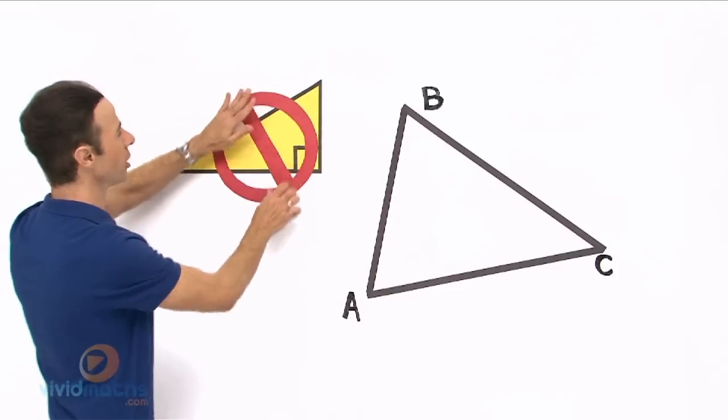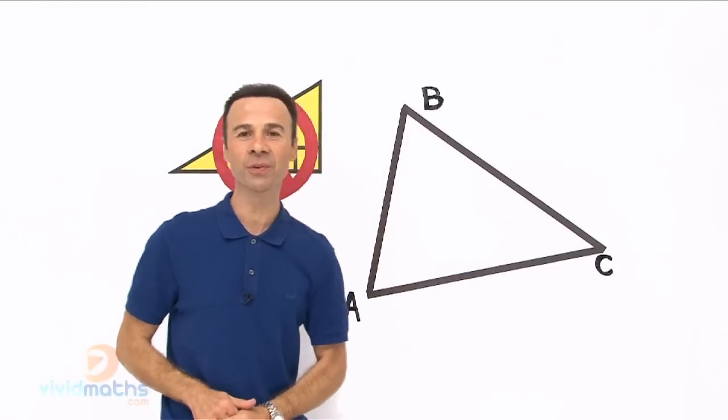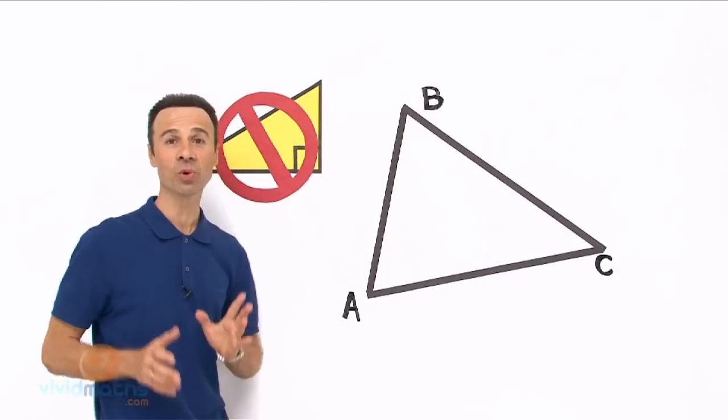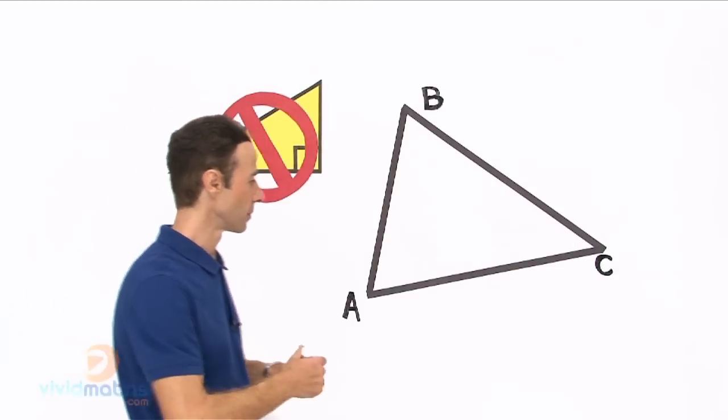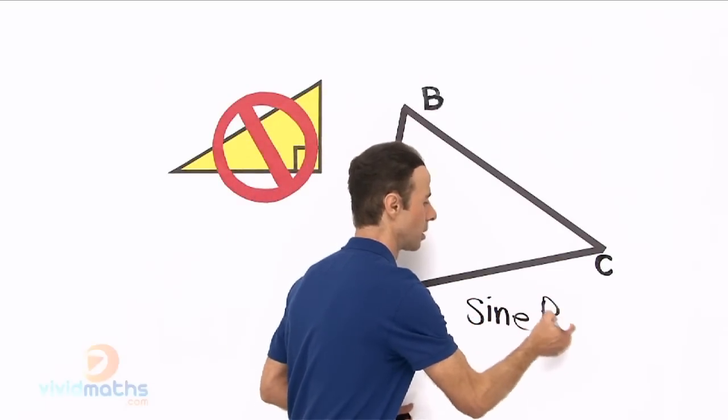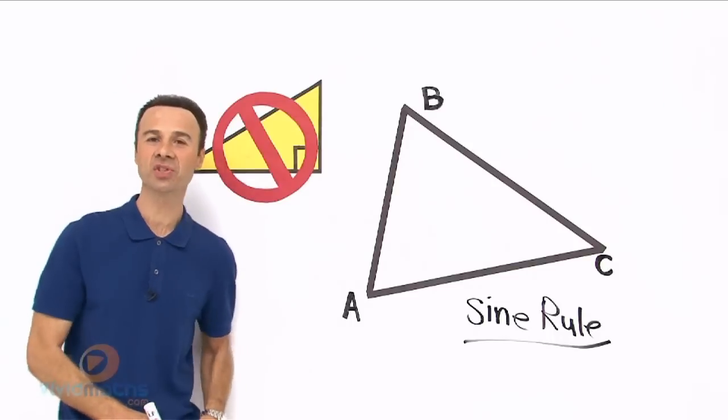So we are going to work with non right angle triangles and this is an example right here. We are going to use a different technique and in this technique we are going to be using something called the sine rule. And how does that sine rule work?